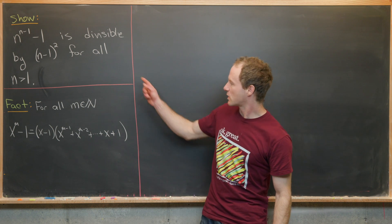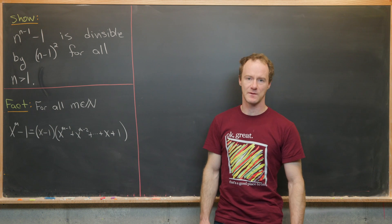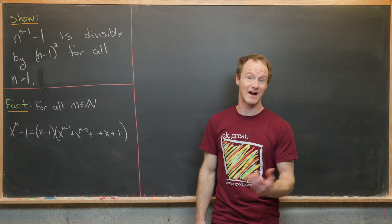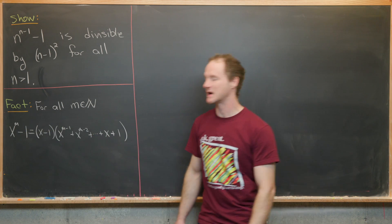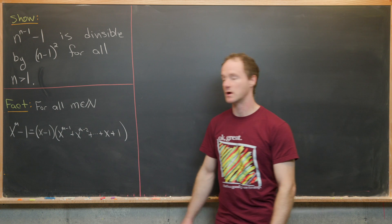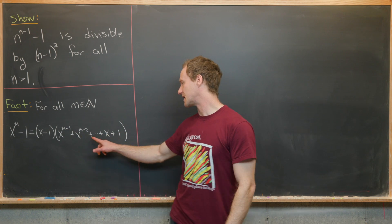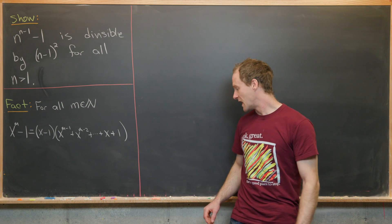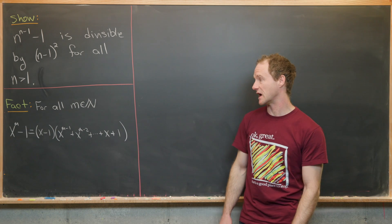We're going to use the following fact, which follows from the standard formula for the sum of a finite geometric series. It says that x to the n minus 1 factors as x minus 1 times x to the n minus 2 plus x to the n minus 3, all the way down to x plus 1. And that's true for all real or complex numbers x.